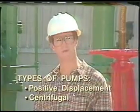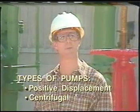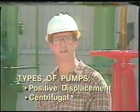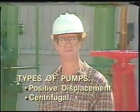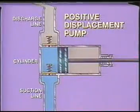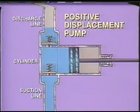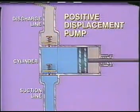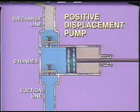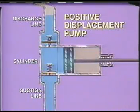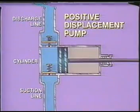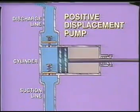There are several types of pumps, but generally they can be placed into two classifications: positive displacement and centrifugal. Positive displacement pumps operate by reducing the volume of space within the pump that the liquid can occupy. The piston forces the liquid from the cylinder into the discharge line. This type of positive displacement pump is called a reciprocating pump.